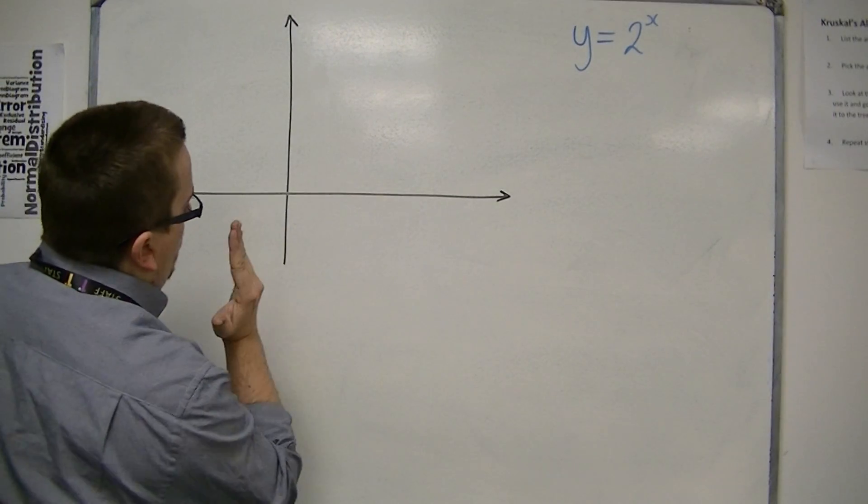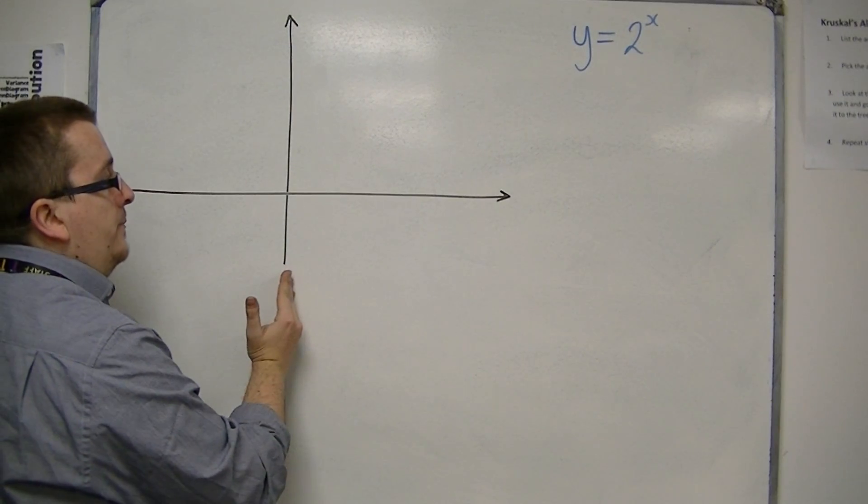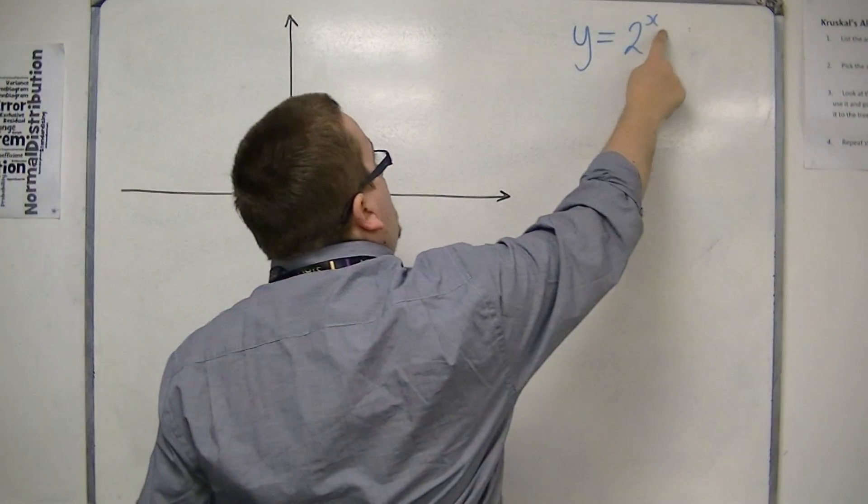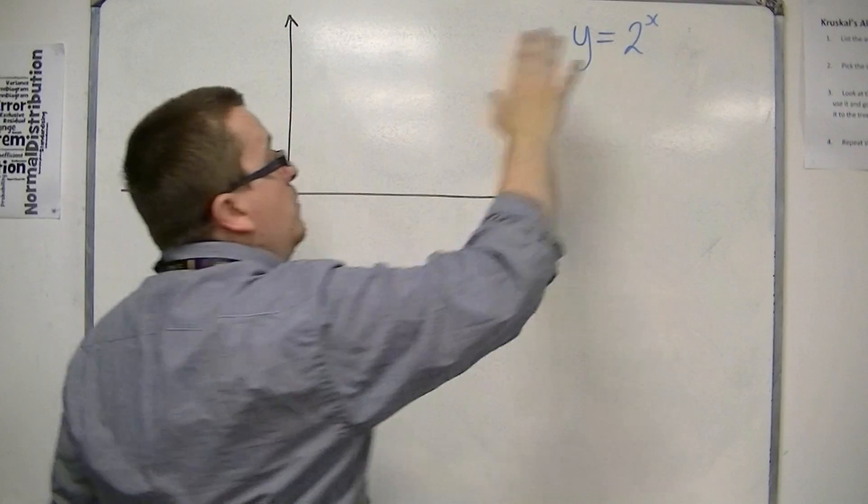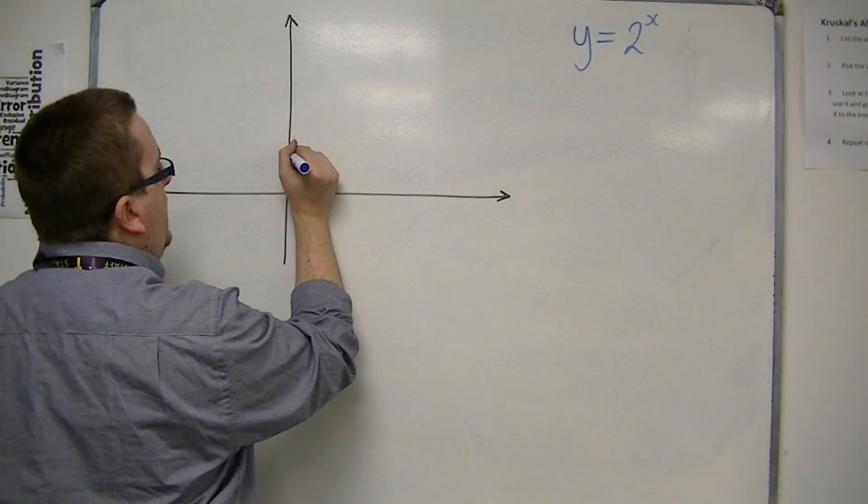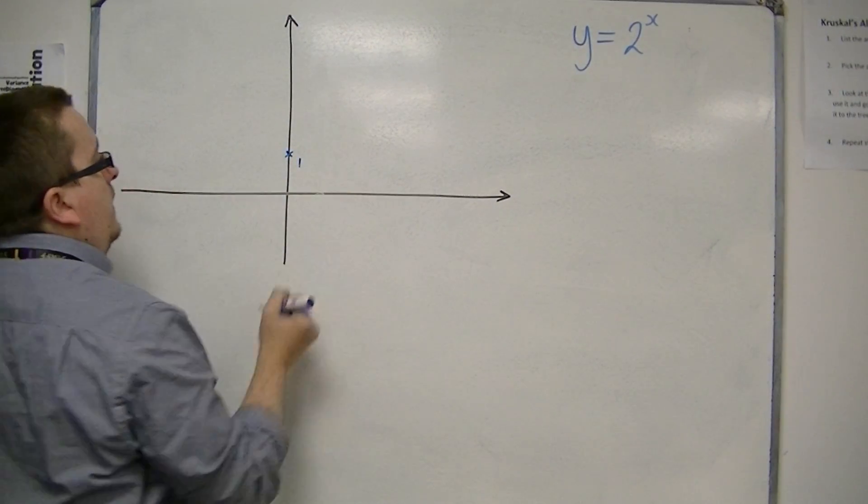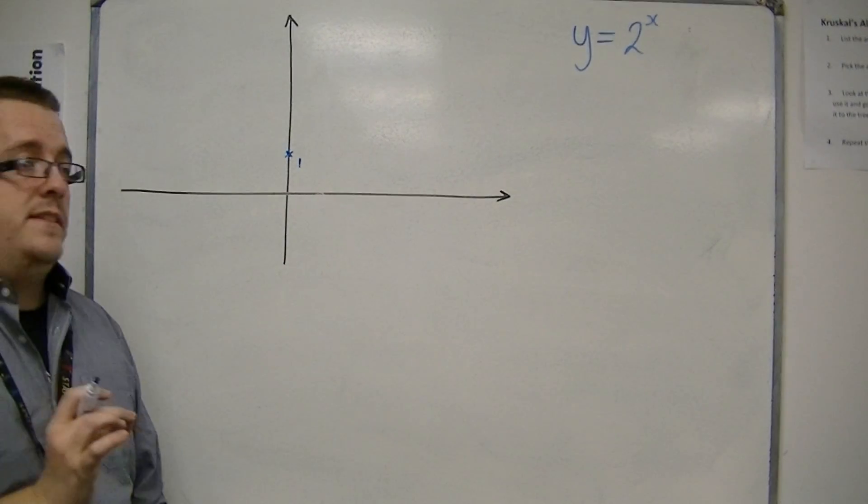When x is 0, that tells me where it crosses the y axis. So if x is 0, I have 2 to the 0, which is just 1. So I can say very safely that the curve intersects the y axis at 1.